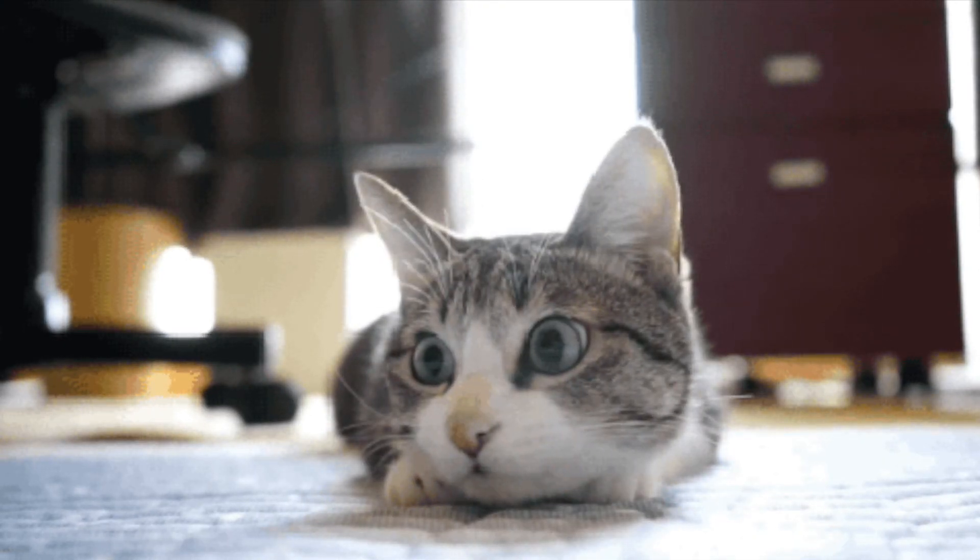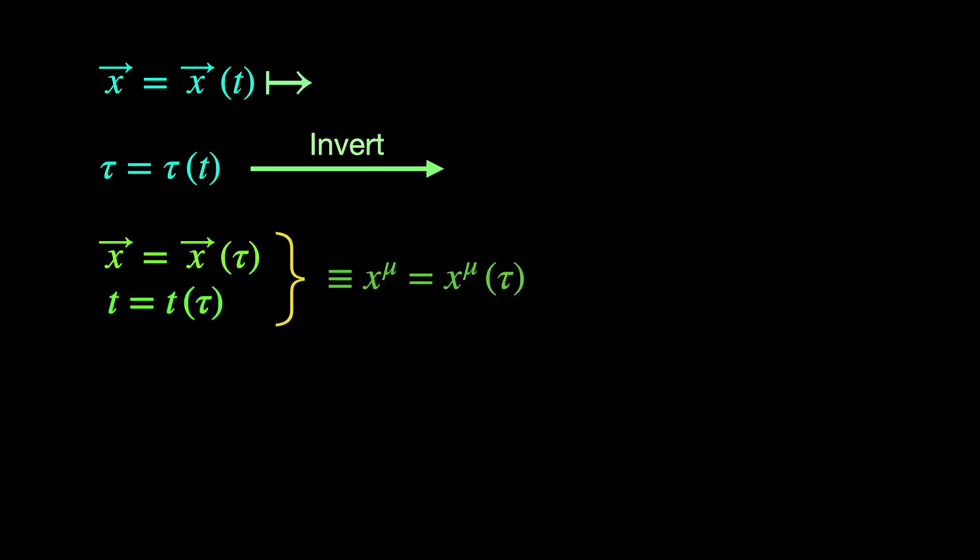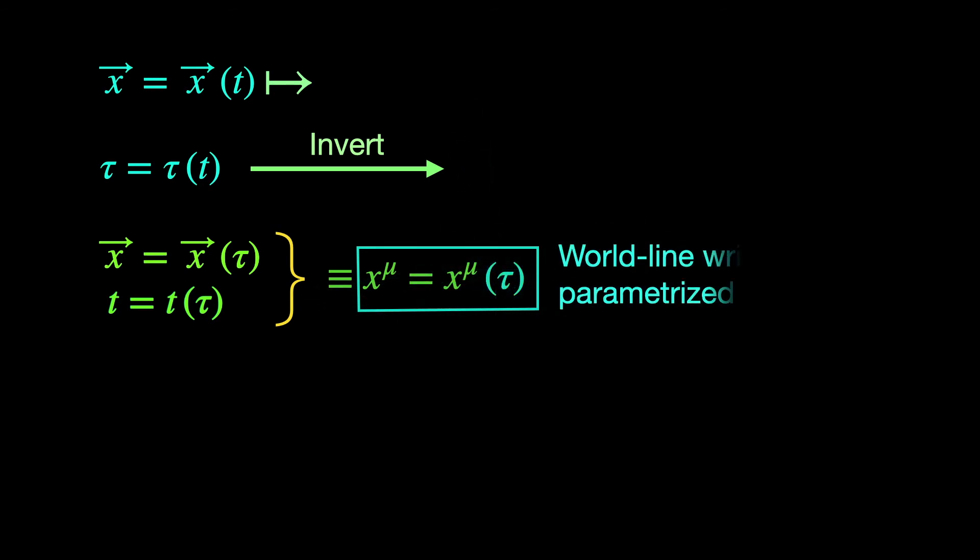Let us see how proper time can act as a parameter to track the world line. We have been observing this moving fellow. So we already have all his spatial location data tagged with the corresponding coordinate time data. Thus, we can write his trajectory through space as a function of our coordinate time. But we also have the way to find out the clock reading of this moving guy with our coordinate time readings. So we can invert that relation to write coordinate time as a function of the proper time of this guy. Using this inverted relation, we can also write the spatial trajectory as a function of this guy's clock time or proper time. Thus, we now have both the spatial and temporal coordinates of this guy as measured from our frame as a function of his proper time. Collectively, these spatial and temporal coordinates are called space-time coordinates and written as a space-time coordinate four vector x mu. In other words, we have his space-time trajectory or world line written as a parametrized curve, where his proper time serves as parameter.